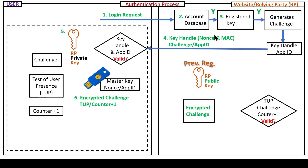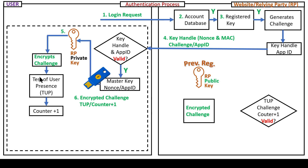Now that we've validated the website's information, we proceed on with allowing the hardware security key to prove it's valid. That dynamically generated private key is going to be used to encrypt the challenge received from the relying party. That encrypted challenge is also going to be combined with something called a test of user presence and a counter plus one. That is a safeguard against keys being cloned. Each time the key is authenticated to an account, the counter is incremented by one. If that counter is not synchronized, the key will be disabled from authenticating to the account.